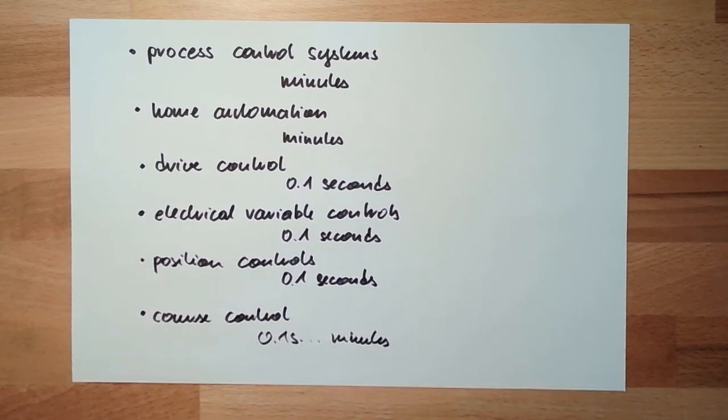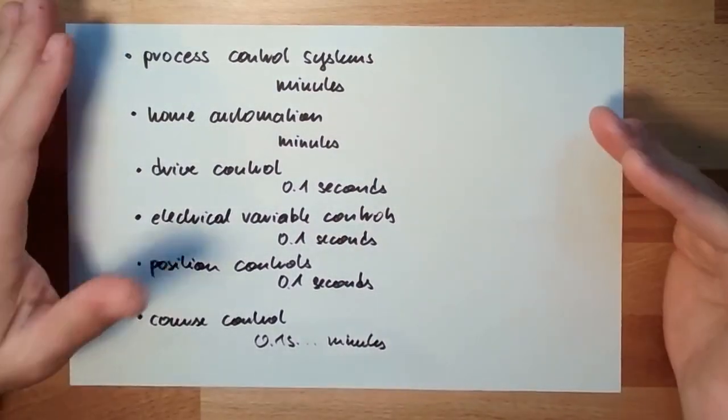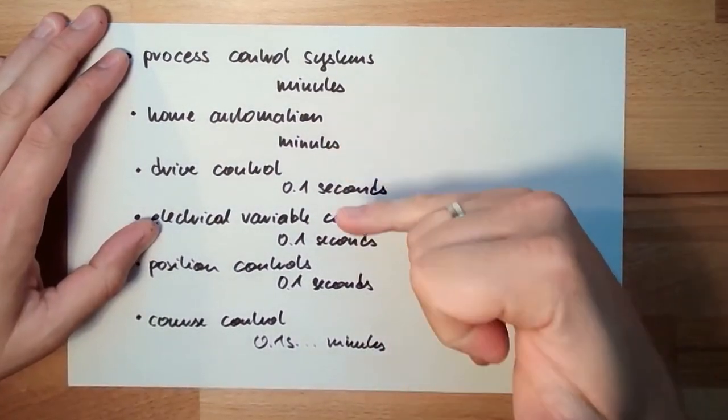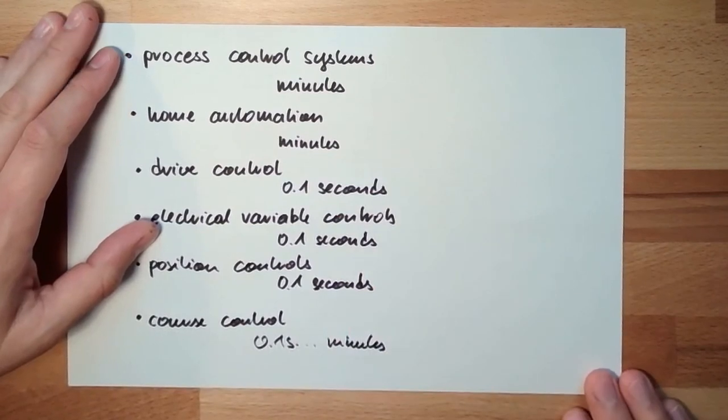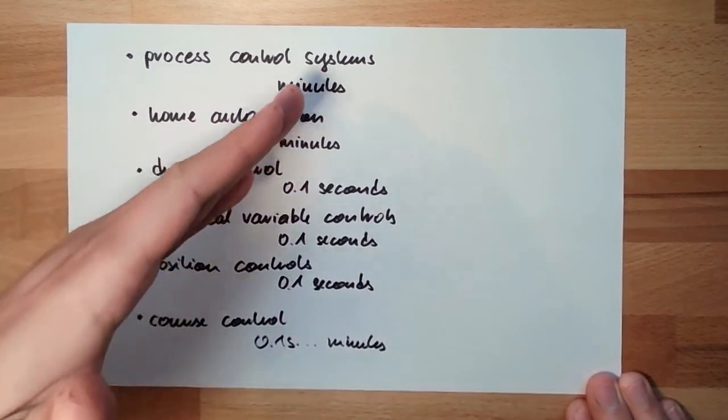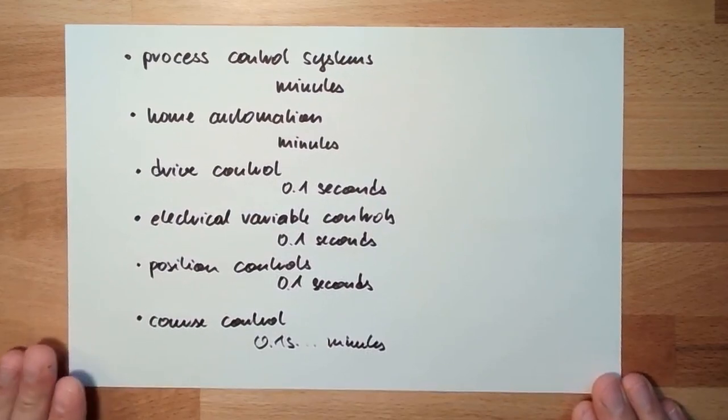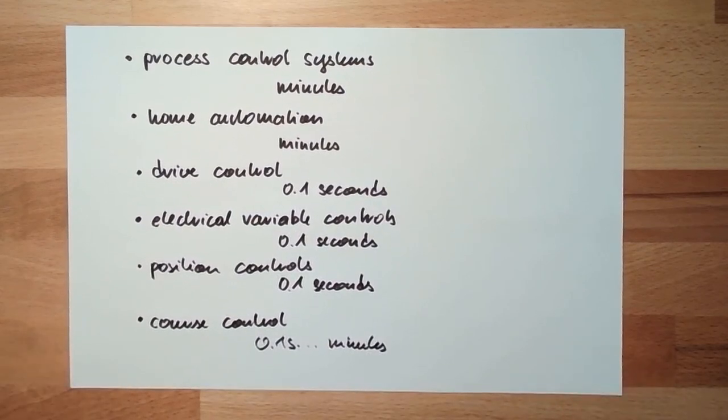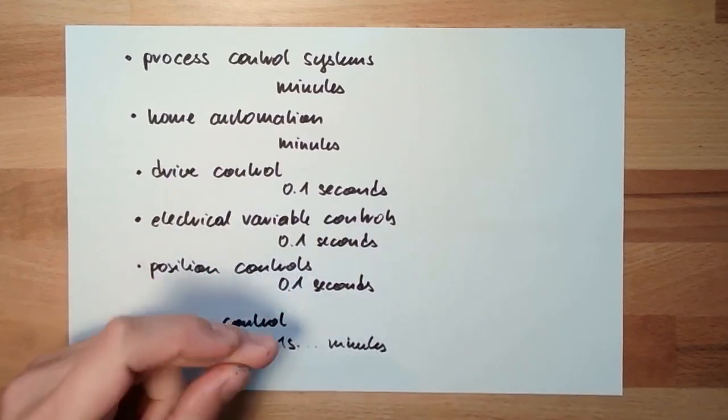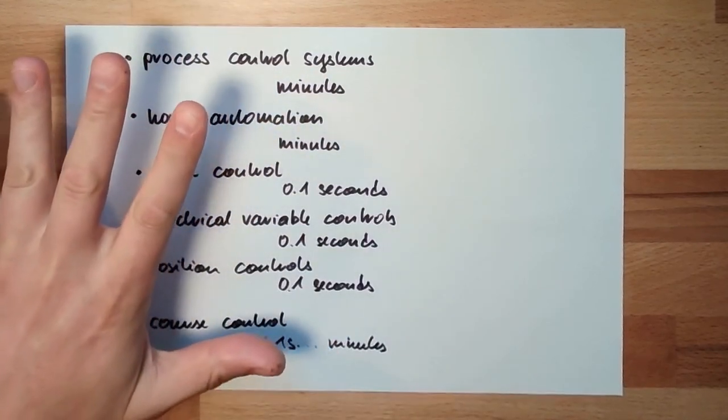So, you see, we do have a broad application area, and the time constants are really, really different. Some process control systems, then it takes not minutes, then it maybe takes one hour, it's also okay, if this is a heavy, big process. From really almost milliseconds to minutes, everything is inside.